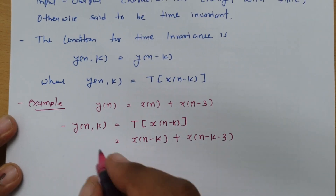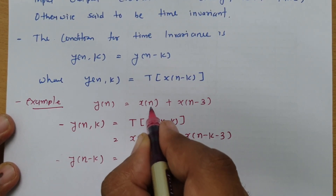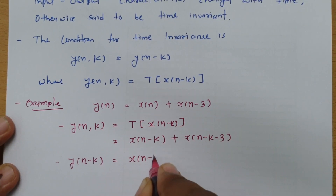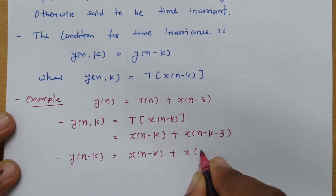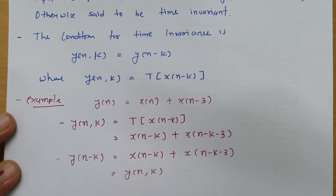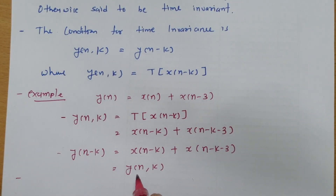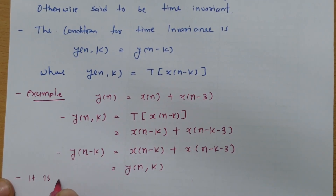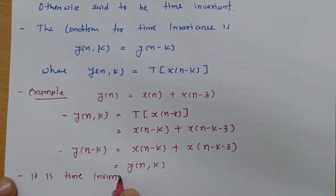Now, what is y(n minus k)? In that we need to replace n with n minus k. So x(n) is replaced by x(n minus k), giving x(n minus k) plus x(n minus k minus 3). We can see that y(n, k) equals y(n minus k), so this system follows the condition and it is a time invariant system.